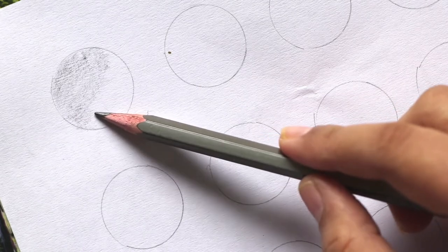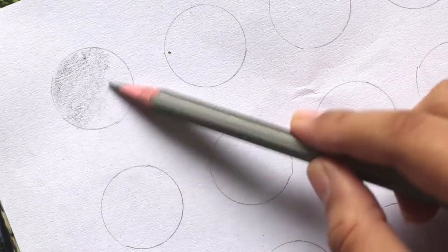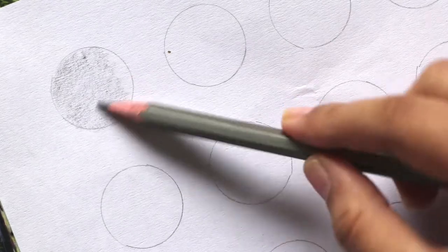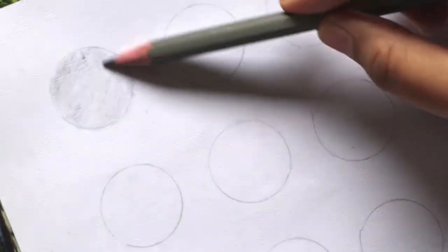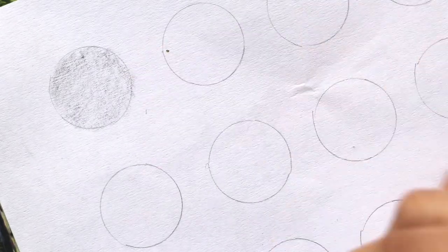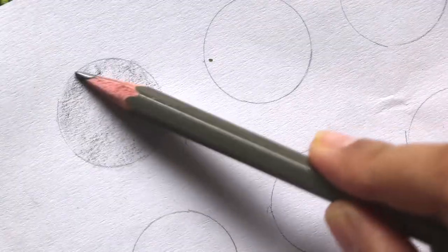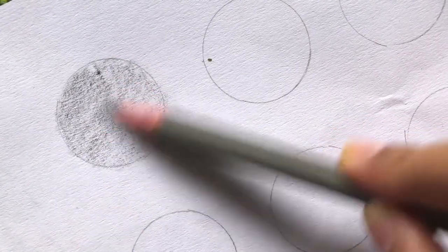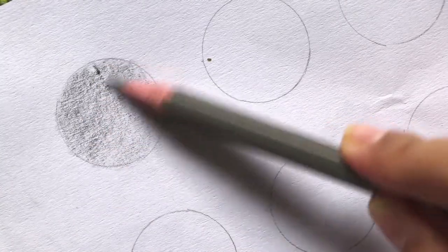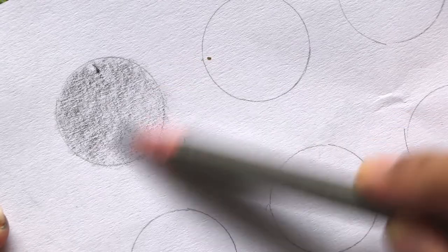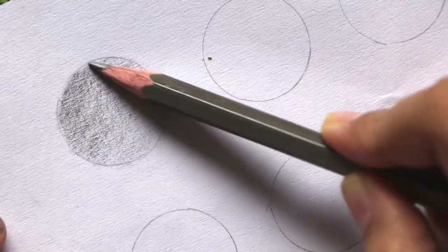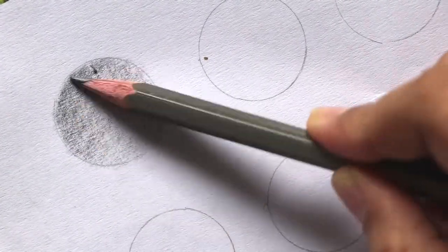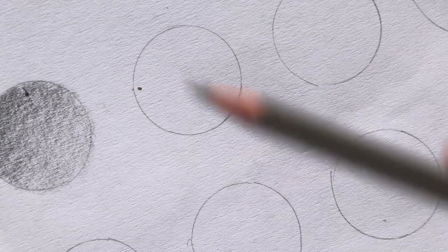After this, this is the lightest tone. After this you have to do a mid tone and then the dark tone. Even if it goes out of circle, it's fine, you can erase it later. So moving on to our second circle.